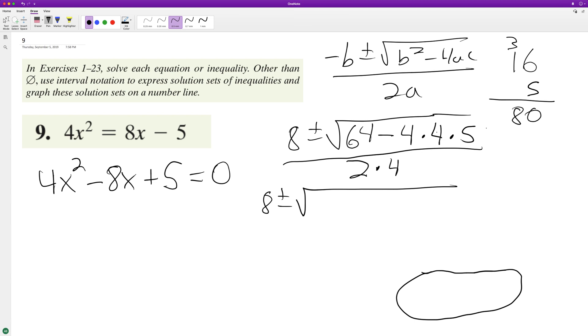It's 80. So we end up with 8 plus or minus the square root of negative 16 over 8.